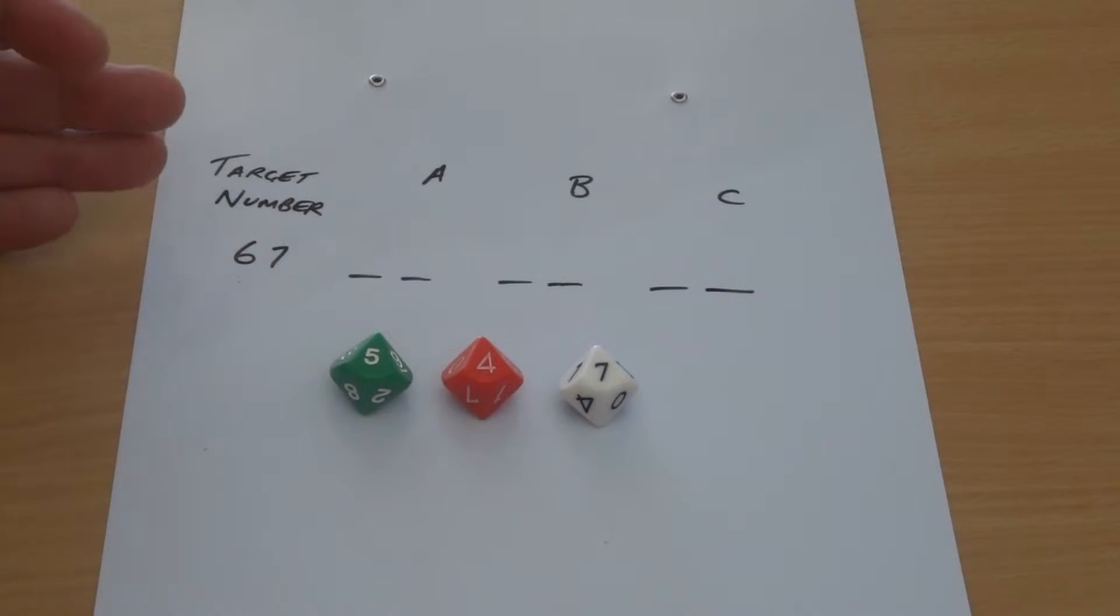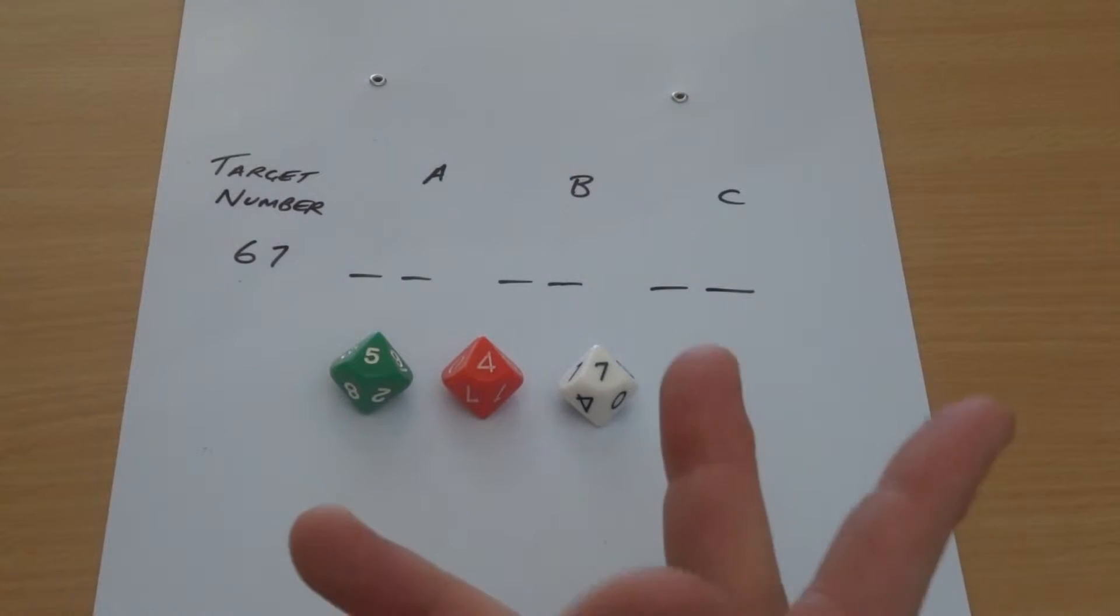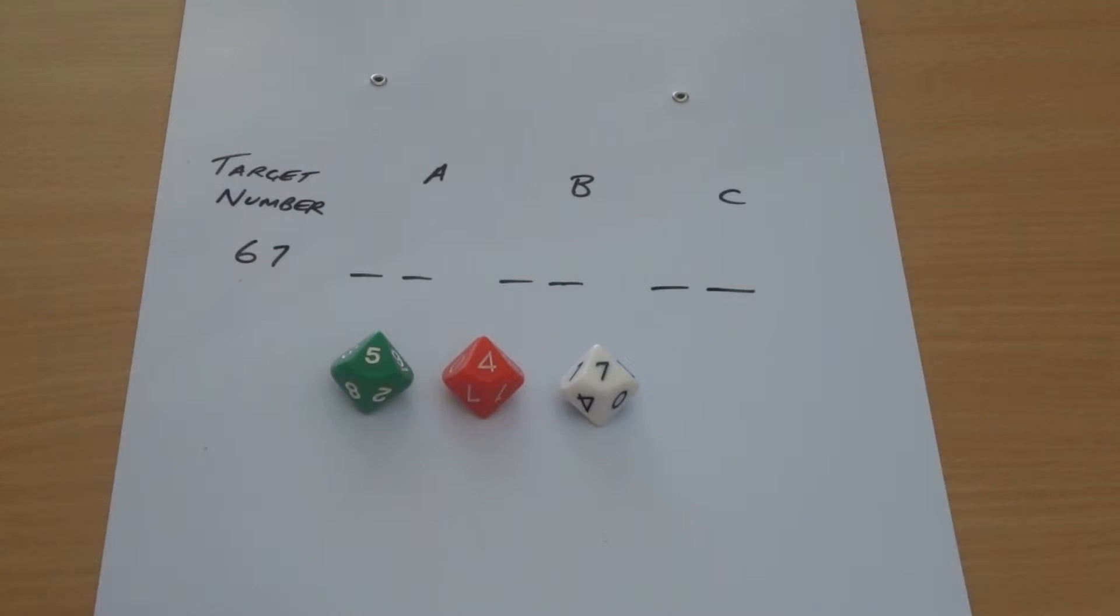Essentially what you do is set a target number, and I've set the number 67 for this. Because we've got three players, we put three sets of dashes on the board. You roll three dice, but you only need to choose two to create a number that's as close to 67 as possible.